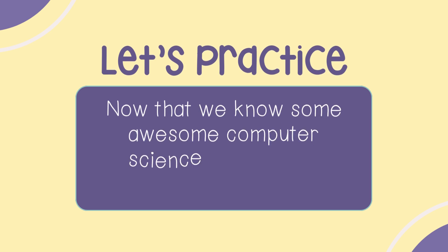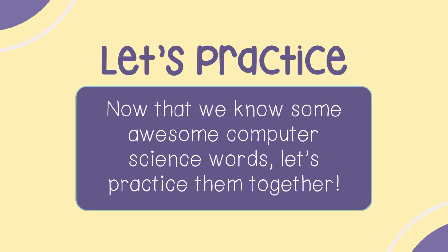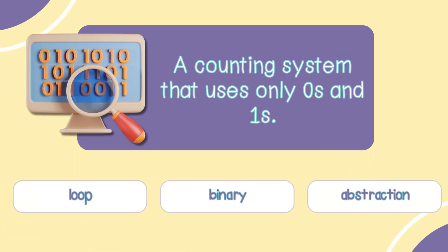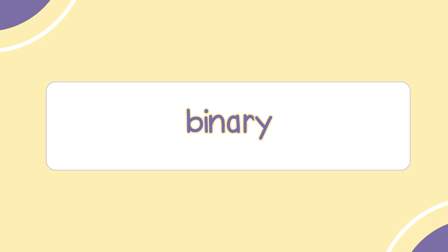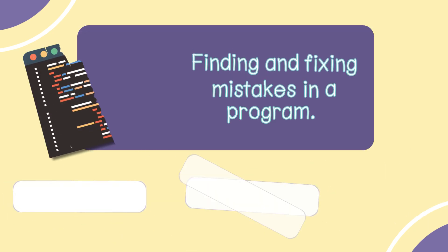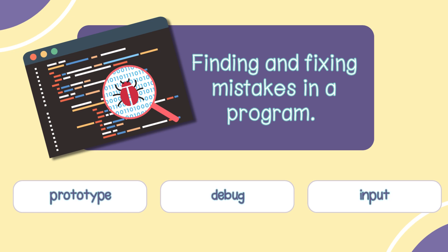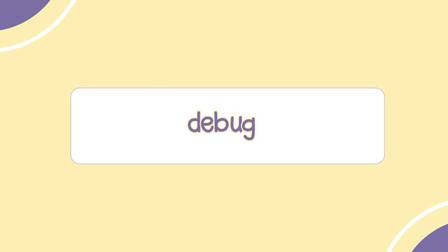Now let's practice. Now that we know some awesome computer science words, let's practice them together. What is a counting system that uses only zeros and ones? Loop, binary, or abstraction? The answer is binary. Finding and fixing mistakes in a program — is that prototype, debug, or input? Debug.